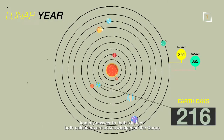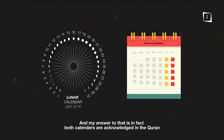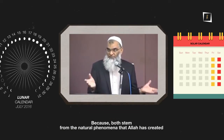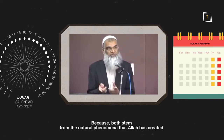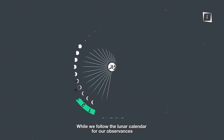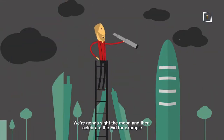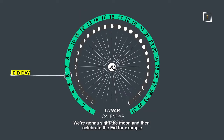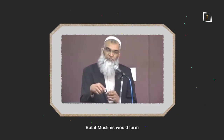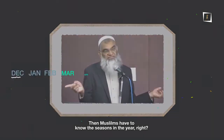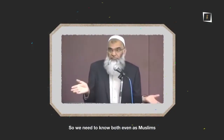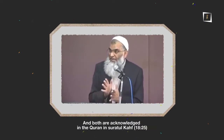and Muslims follow the lunar calendar. My answer is that in fact both calendars are acknowledged in the Quran, because both stem from the natural phenomena that Allah has created — Allah has created the moon and Allah has created the sun. Both calendars are useful. While we follow the lunar calendar for our observances — we cite the moon and celebrate Eid, for example — if Muslims would farm, they have to know the seasons, which are regulated according to the solar calendar. So we need to know both, and both are acknowledged in the Quran.